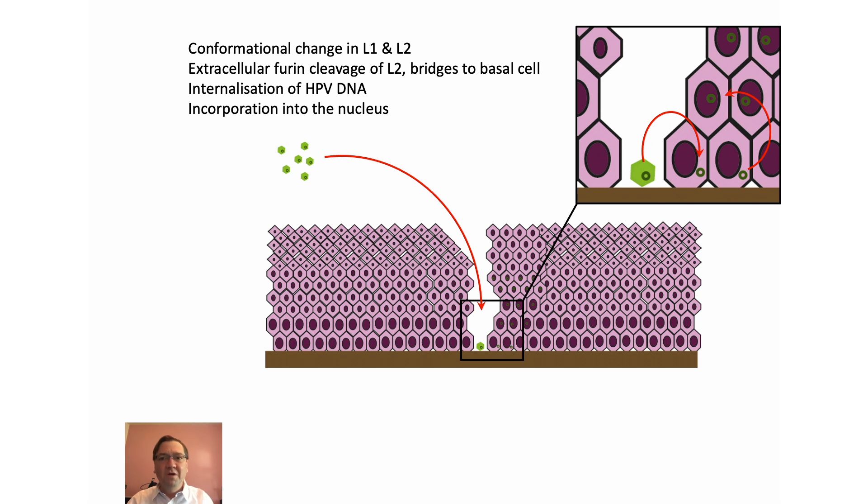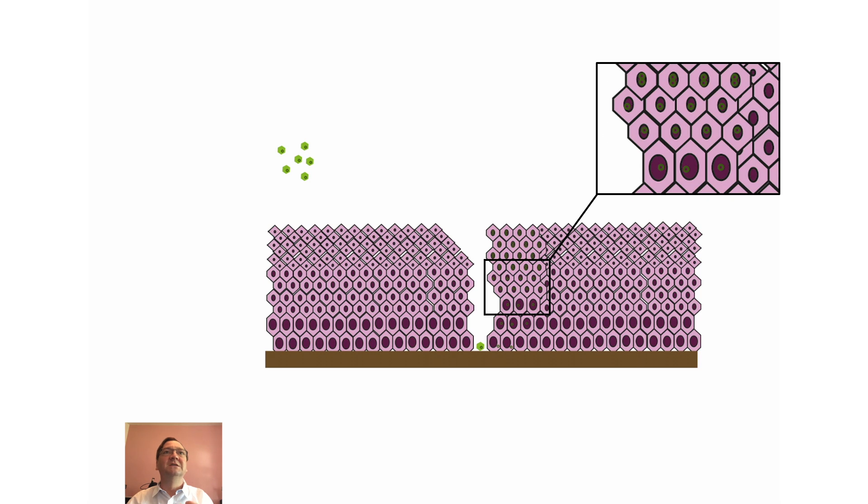So the whole process of HPV multiplying involves HPV being internalized and duplicated, so we get replication of cells and the virus in the human host, and amplification of viral DNA.